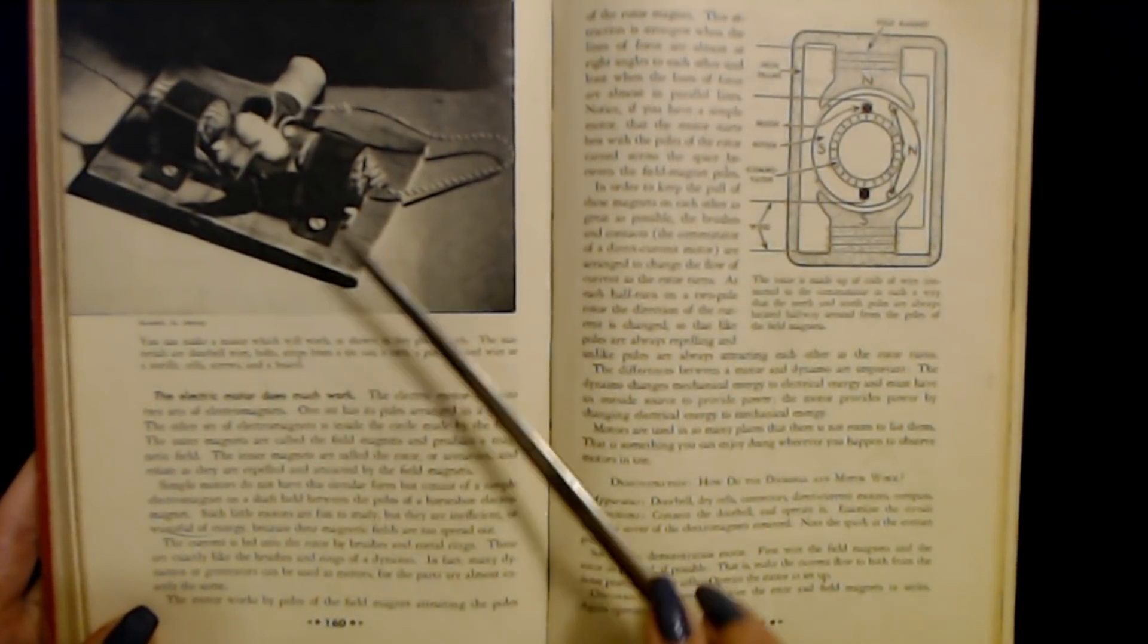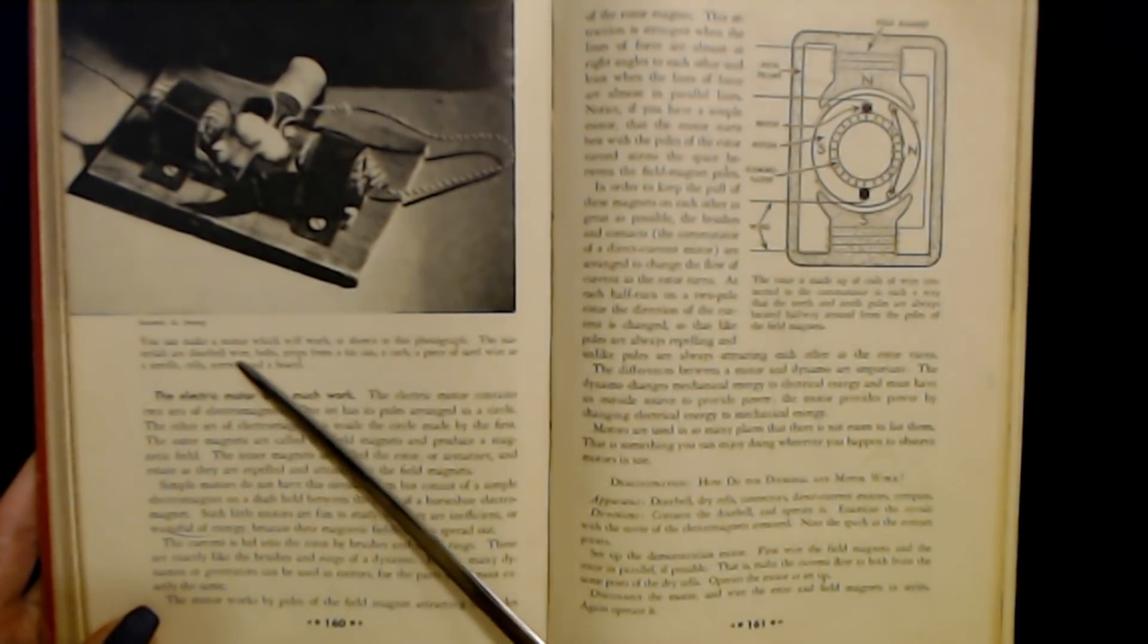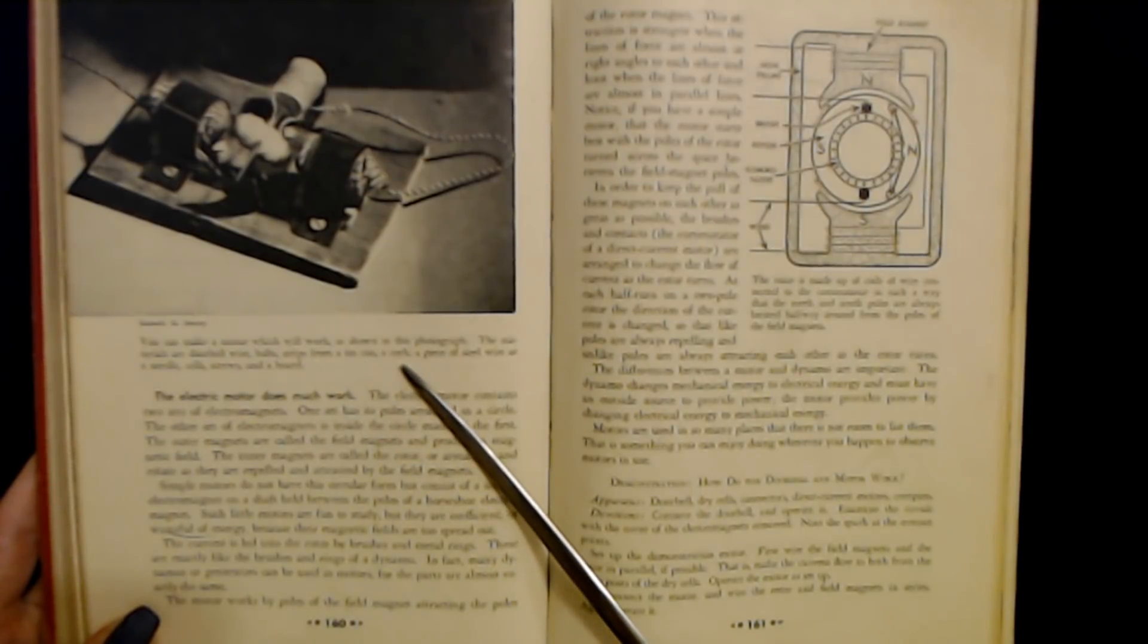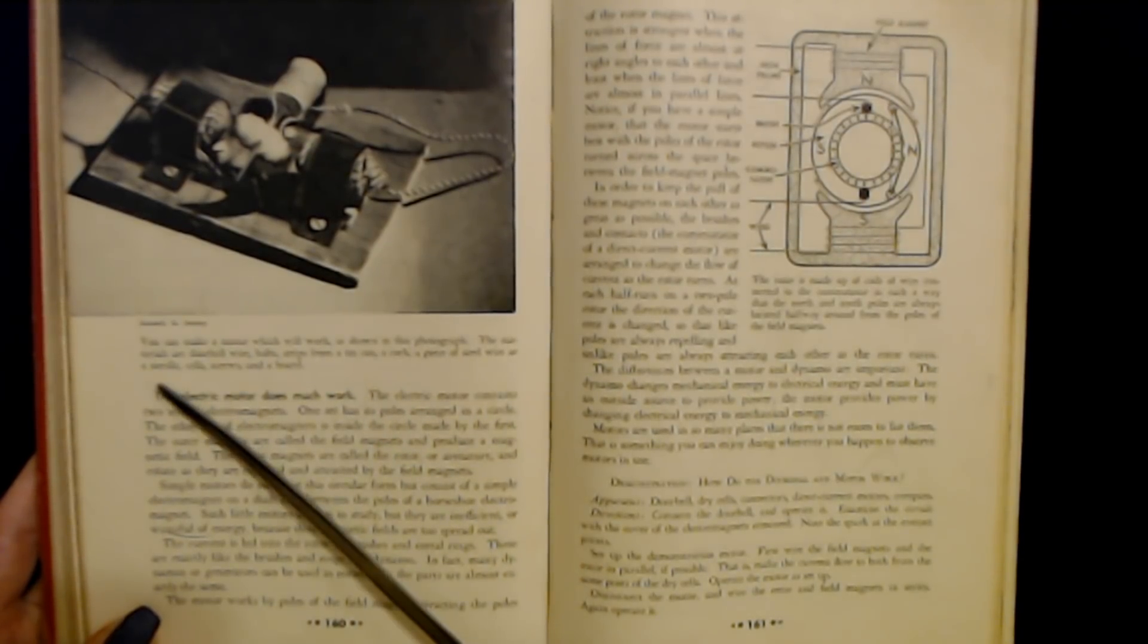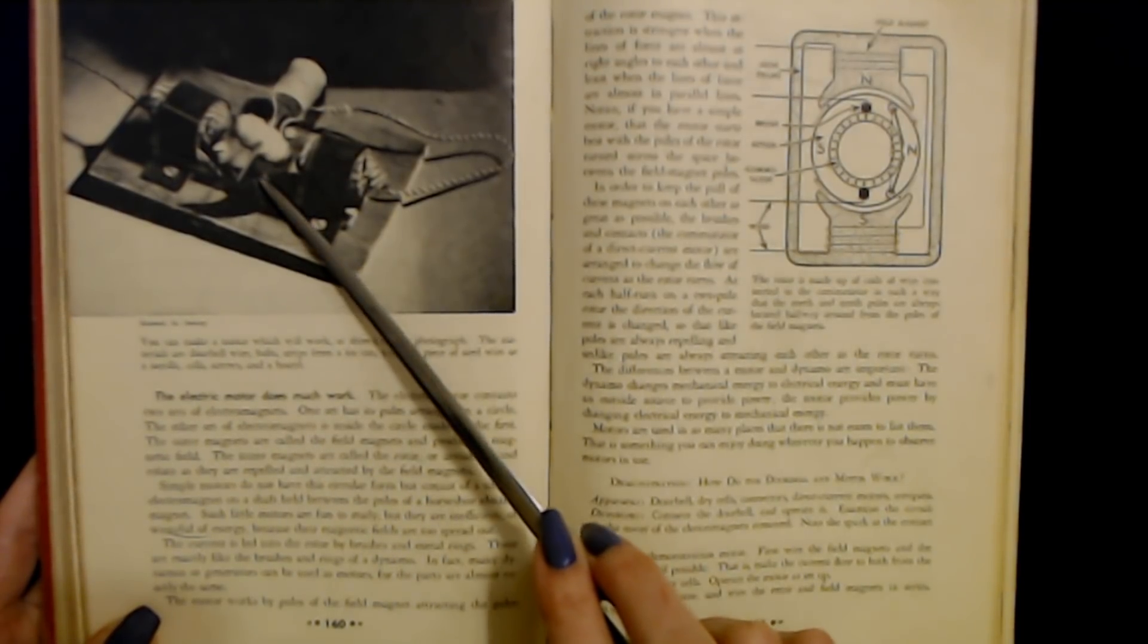You can make a motor which will work as shown in this photograph. The materials are doorbell wire, bolts, strips from a tin can, a cork, a piece of steel wire or a needle, cells, screws, and a board. A little motor.